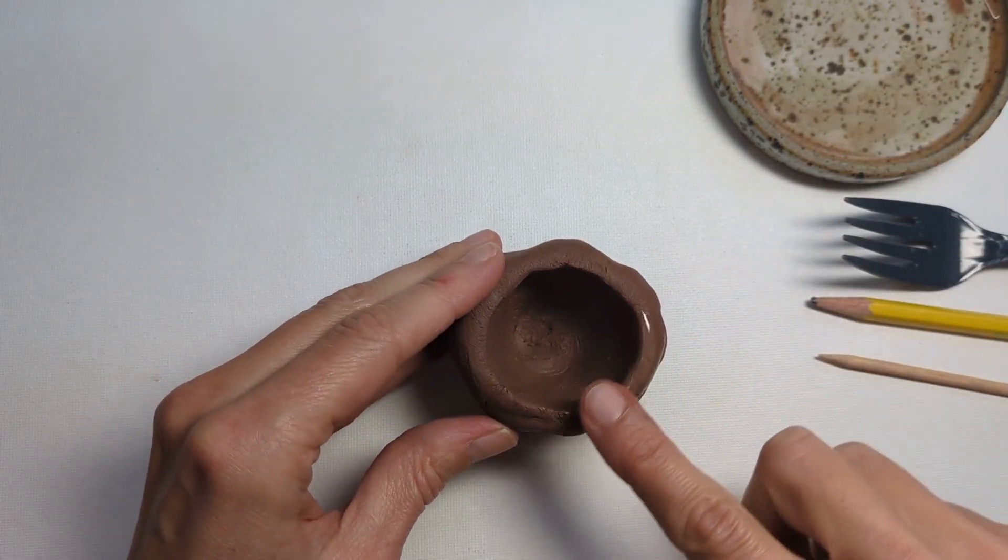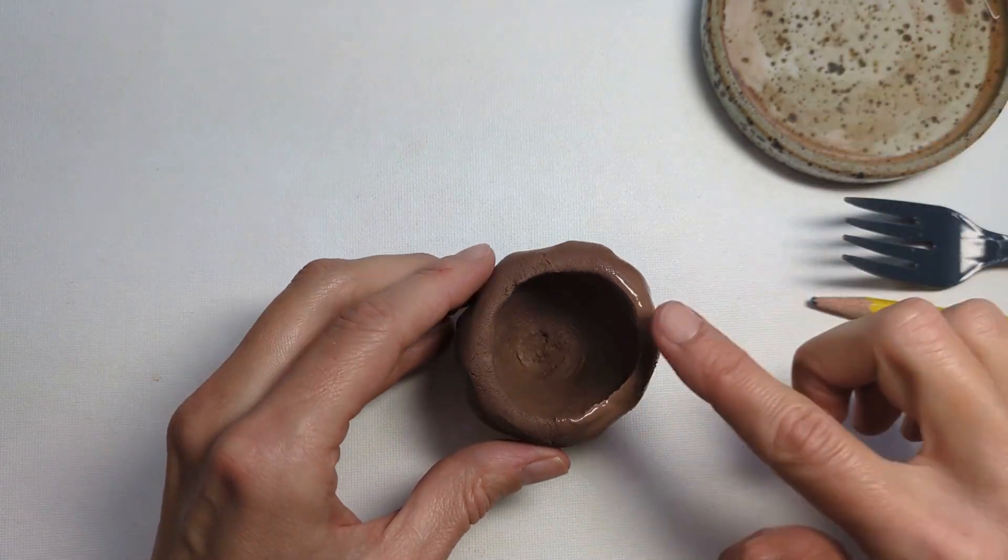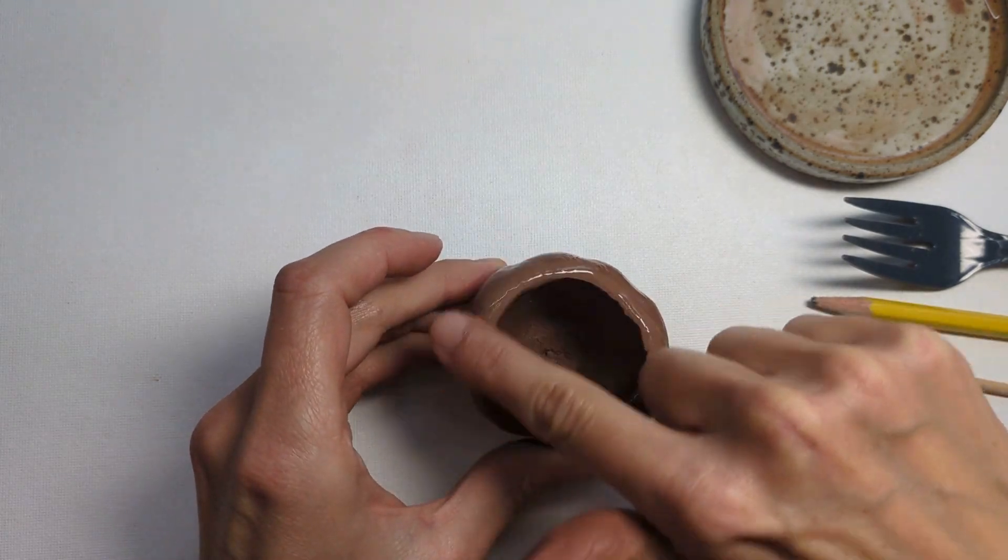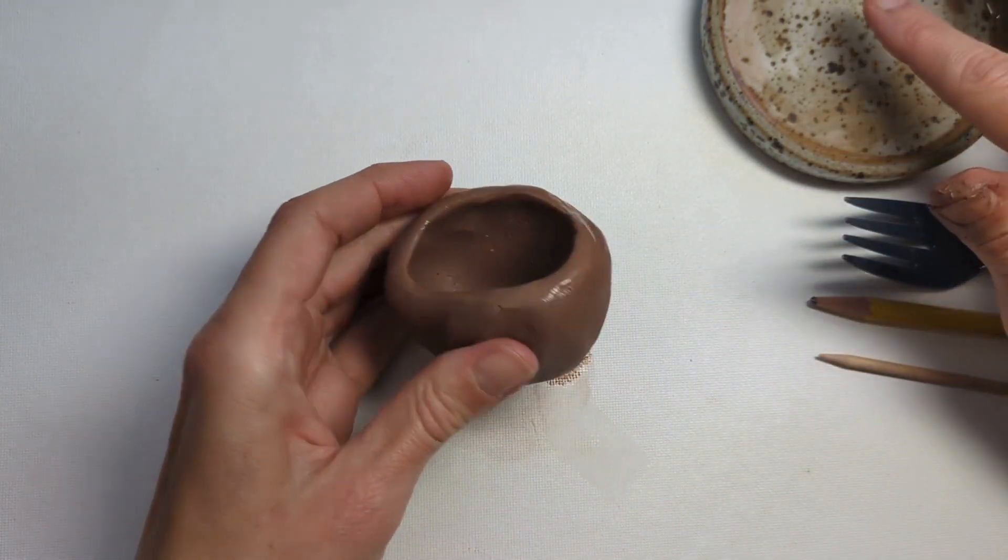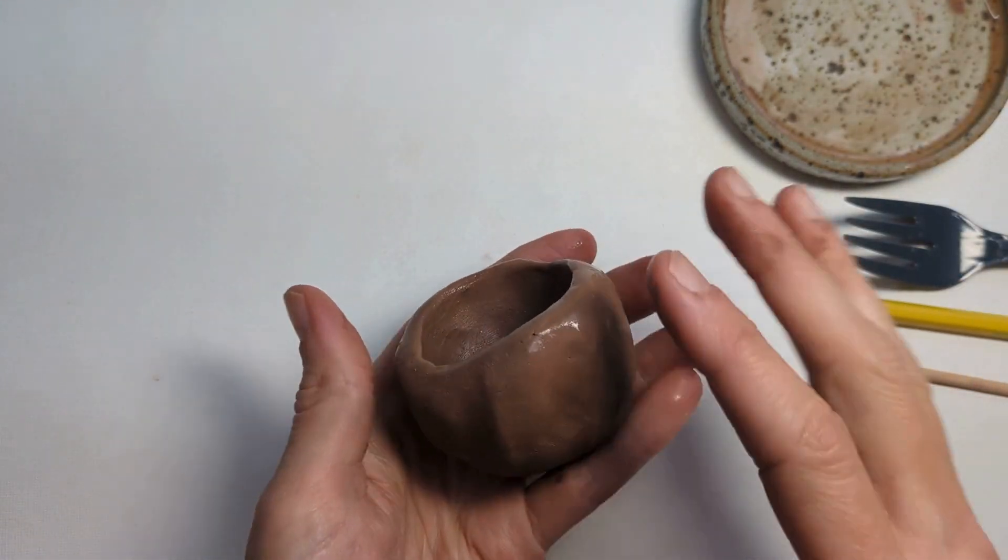Then I'm going to take my finger, get it wet in the water, or you can also have slip. Slip would be a little bit of clay mixed with the water, that is also fine. I'm going to just rub any spots that are dry on my pinch pot. I can also look around the rest of the pot and see if it was dry anywhere else. It looks pretty good, so now I am ready to decorate.